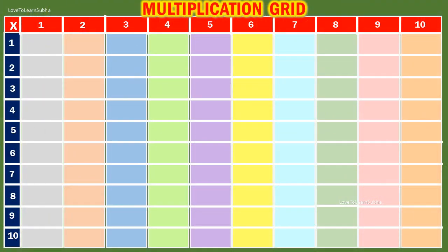Table of 1. 1 1s are 1. 1 2s are 2. 1 3s are 3. 1 4s are 4. 1 5s are 5.